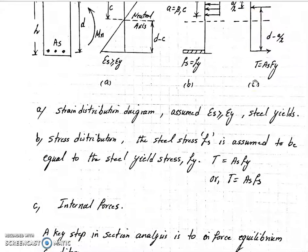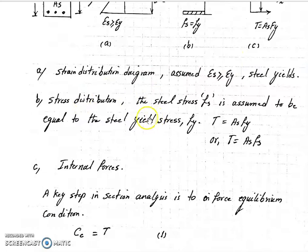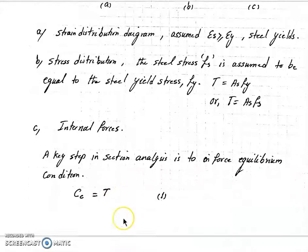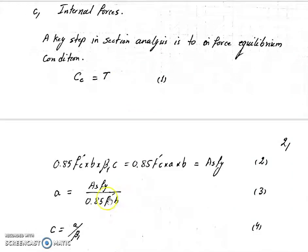We use internal forces equilibrium condition to find the Mn. Cc is equal to T, so we have the Cc value and T value, so we substitute those two and we find our a.